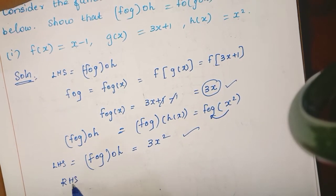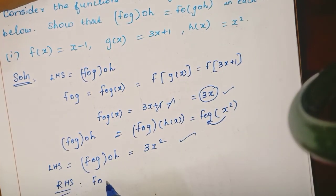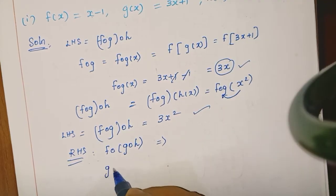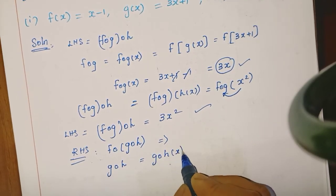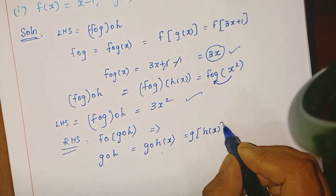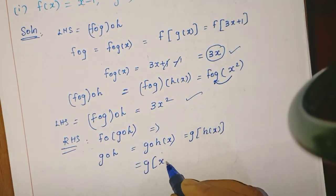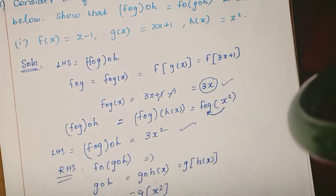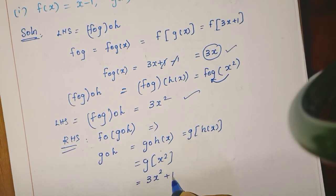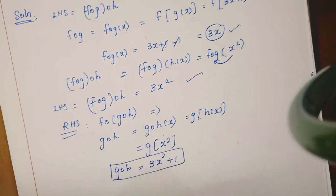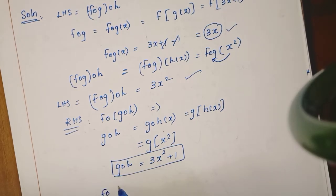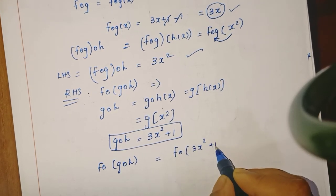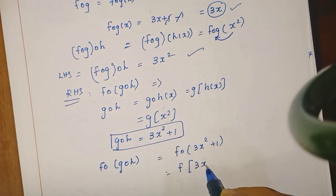Next, RHS. RHS is f composition g composition h. You are giving one input x. So this becomes g of h of x. Now, h of x is x squared, so this is g of x squared. The g function is 3x plus 1, so g of h of x gives 3x squared plus 1.